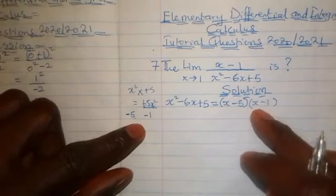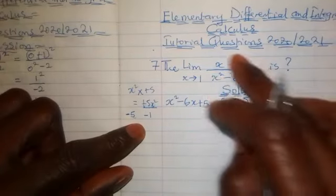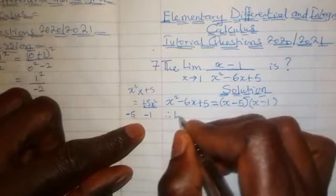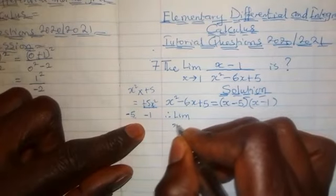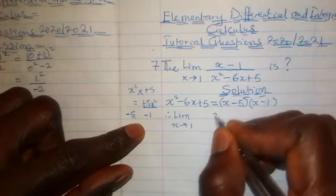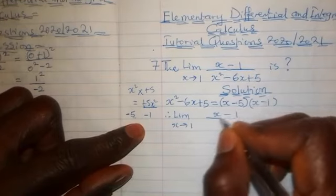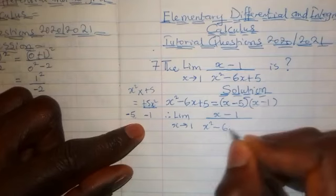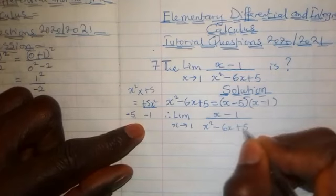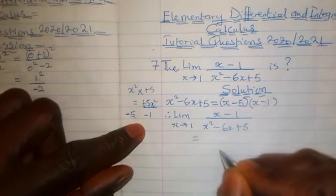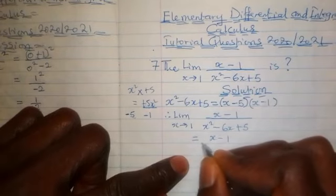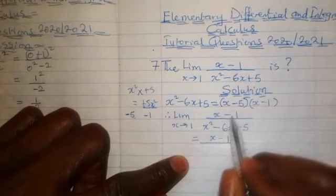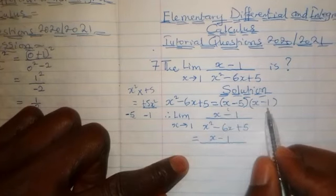Now with these factors done, we are now going to evaluate this. So we can say, therefore, the limit as x tends to 1 of (x-1) all upon x²-6x+5 would now be equals to (x-1) all divided by—now we'll replace this quadratic expression with these factors.